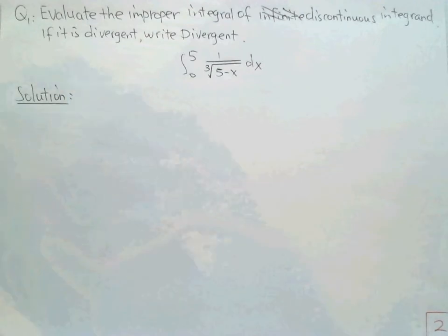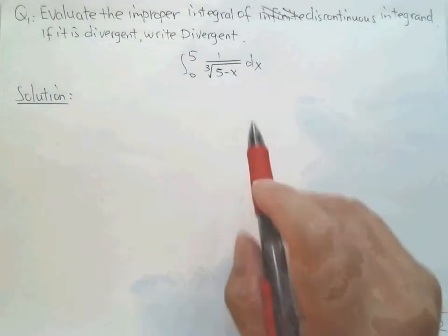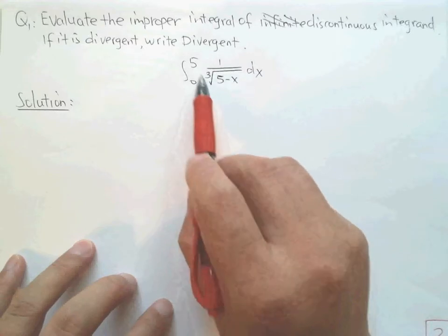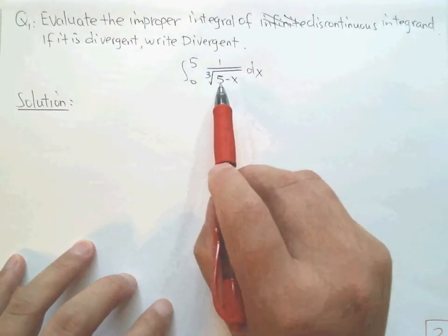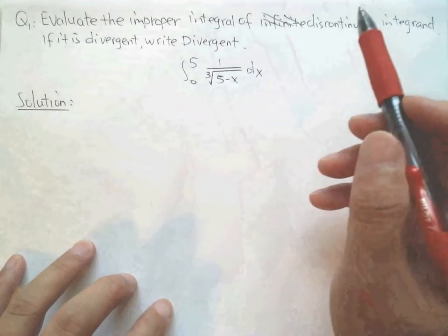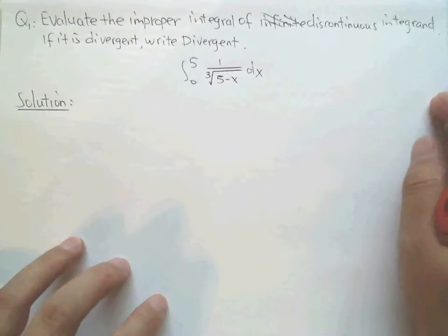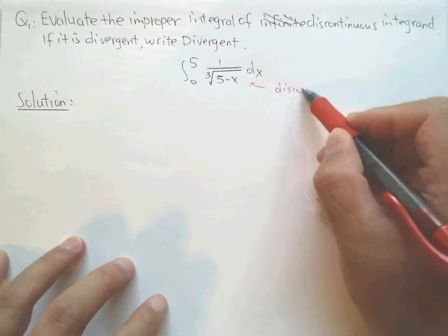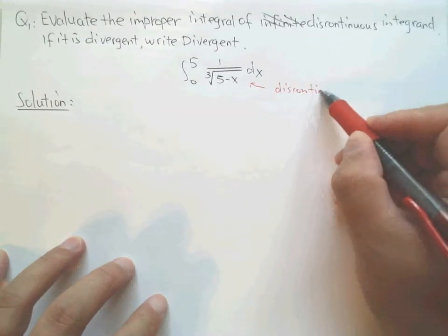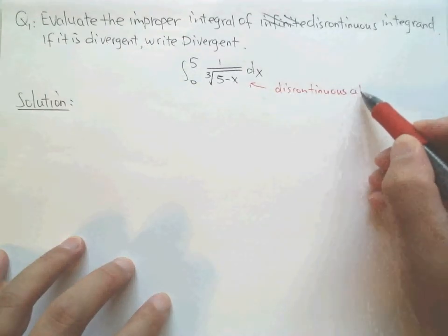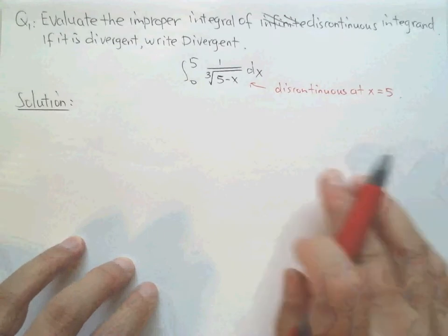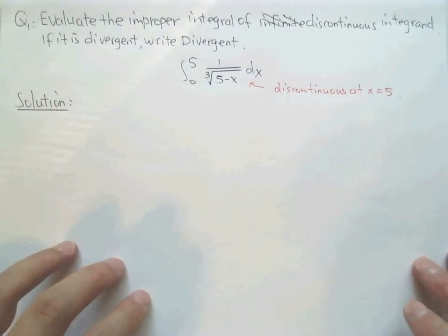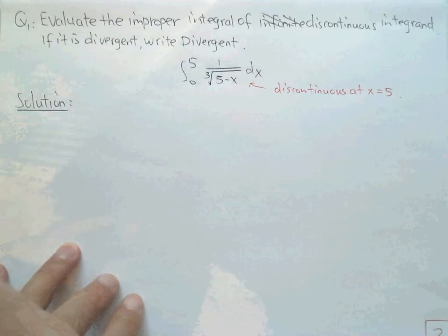Now let's look at the example. Is this integral a normal integral? No. Why? Because when we put five into the function, five minus five is zero, the denominator goes to zero, and one over zero goes to infinity. So the function is discontinuous at x equals five, which is the upper limit — the first case, infinitely discontinuous at the upper limit.